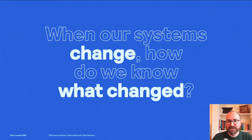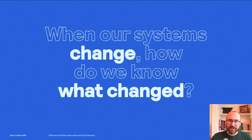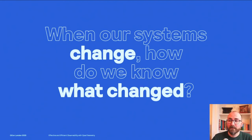And that is, when our systems change — which could be because we deployed a new version of a component or because our users are using it in a completely different way — how do we know what changed? Because our systems are a bit like black boxes: we send a request in and we get a response out, but we have little information on what goes on inside the system. And this is why we produce telemetry in the form of metrics, traces, and logs that gives us more information about what goes on inside a system in production.